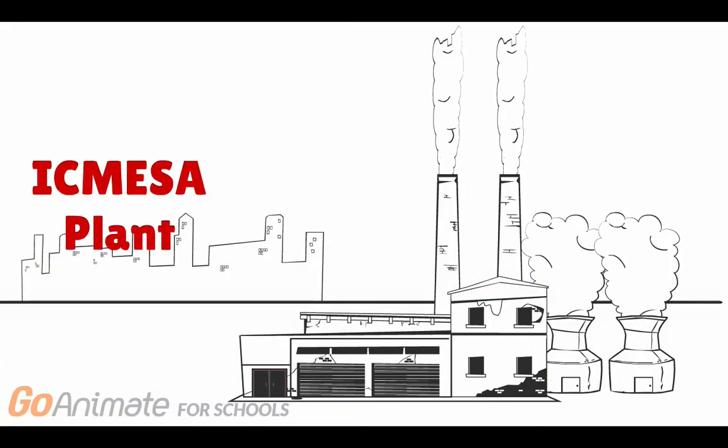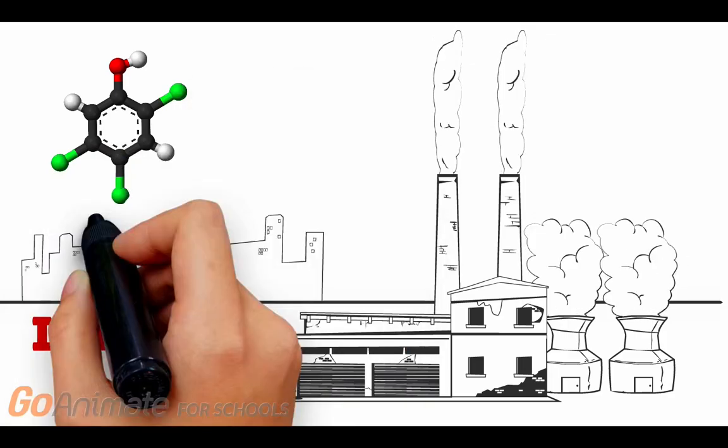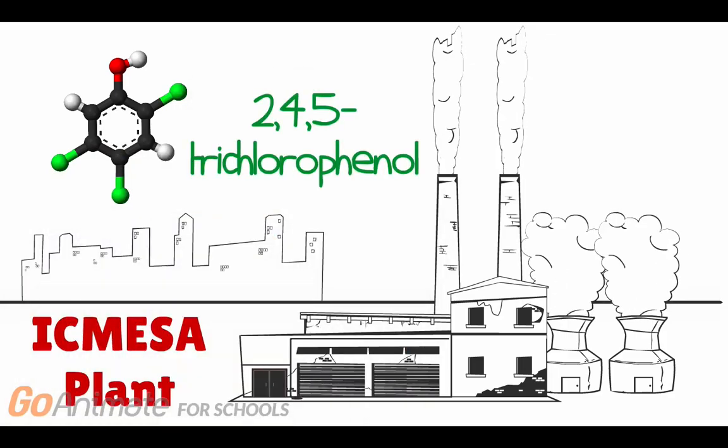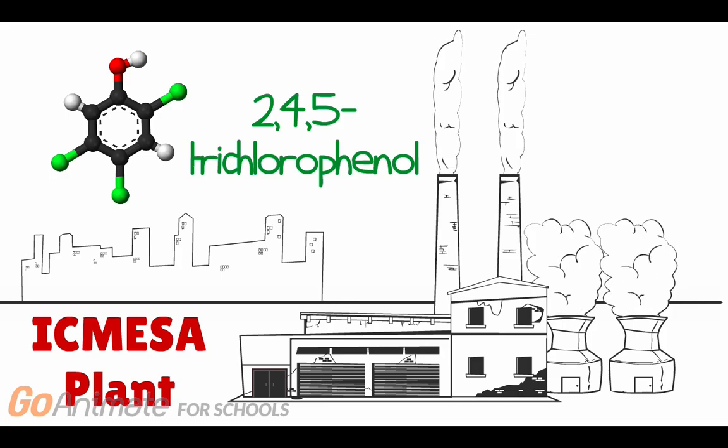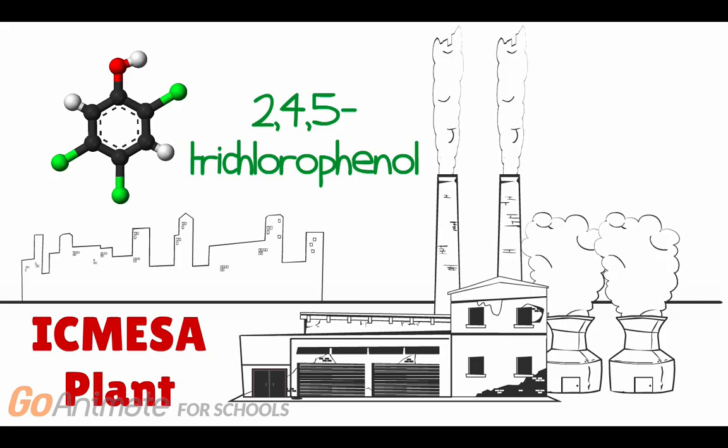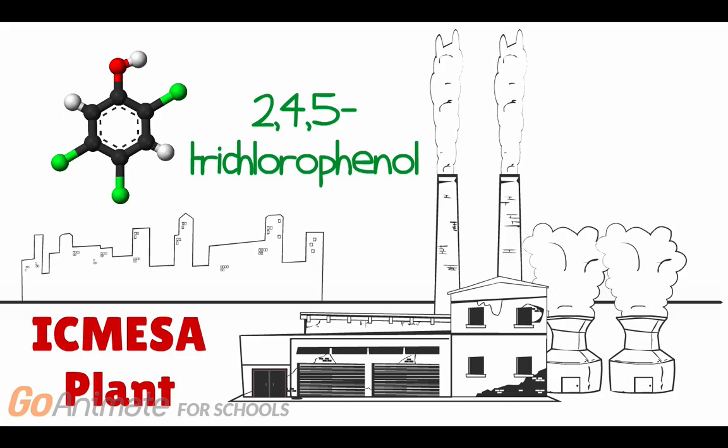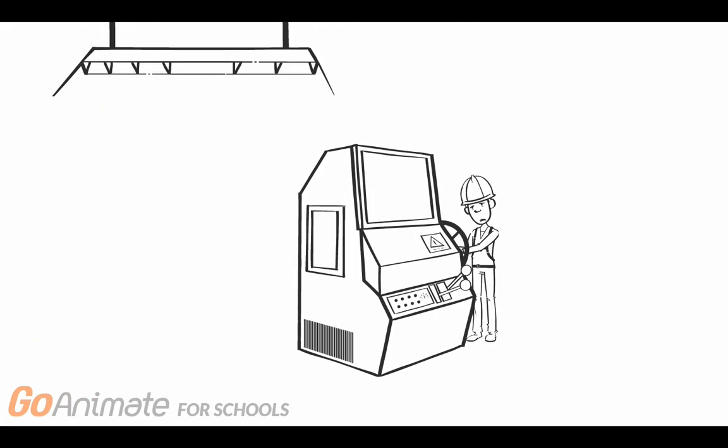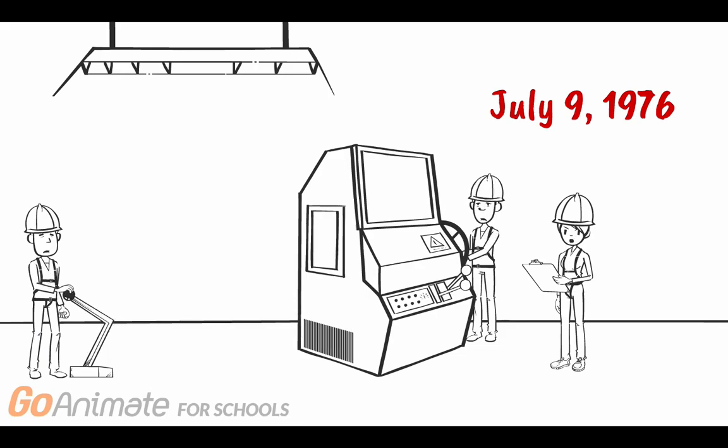A little ways away from Seveso is the ICMESA chemical manufacturing plant. Their specialty is the toxic chemical substance known as 2,4,5-trichlorophenol, which is essential in the production of herbicides and cosmetics. Unfortunately, training and morale were subpar.